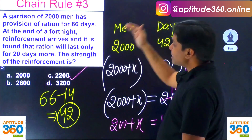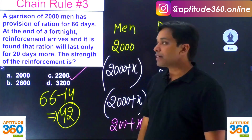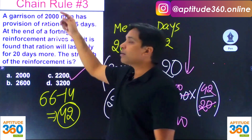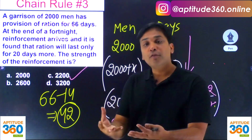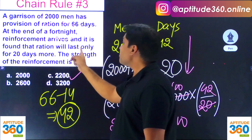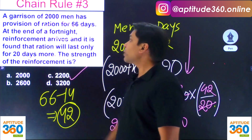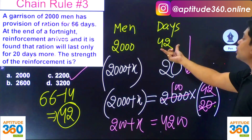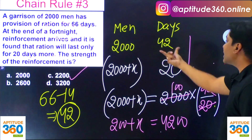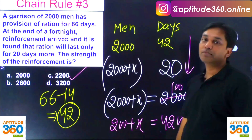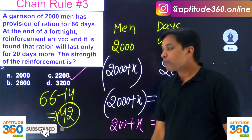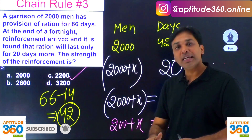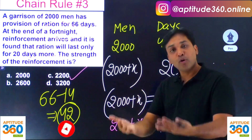There are a few places where you can make mistakes in this problem. Maybe you don't know the numeric value of a fortnight. Maybe you write 20 more days incorrectly — some people write 42 plus 20 instead. Use common sense: if reinforcement arrives and men increase, the days must be less, not more.